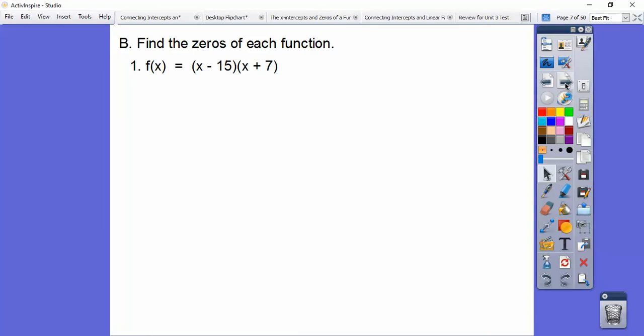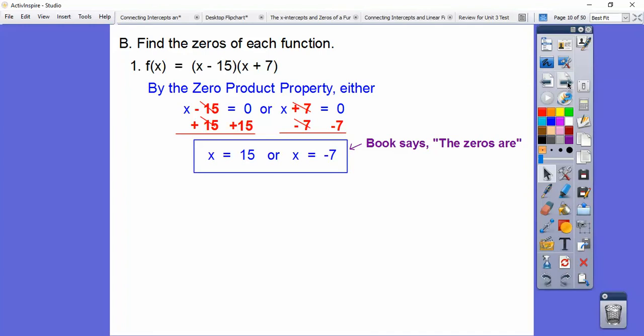Okay, so find the zeros. Here we go. So when it says find the zeros, that just means it equals zero. So we set each of these factors equal to zero. So x minus 15 equals zero or x plus 7 equals zero. So here I'm going to go plus 15 plus 15. Here I'll go minus 7 minus 7. So when we do that, we get x equals 15 or x equals negative 7, and those are our zeros.